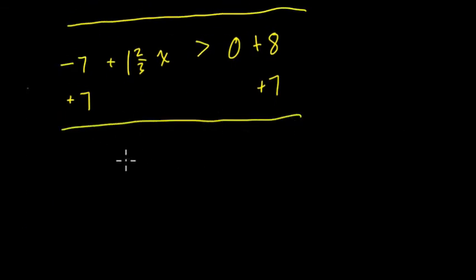So here, what I get is 1 and 2/3 x is greater than 15. 1 and 2/3, to convert this to an improper fraction, I think of it as 1 as 3/3 plus 2/3 is 5/3. So we have 3/3 and 2/3. 3/3 is just 1. Or we can do 3 times 1 plus 2 is 5 over 3. 5/3 greater than 15.